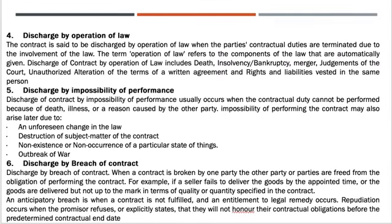Discharge by impossibility of performance: discharge of contract by impossibility of performance usually occurs when the contractual duty cannot be performed because of death, illness, or a reason caused by the other party. Impossibility of performing the contract may also arise due to an unforeseen change in the law, destruction of the subject matter of the contract, non-existence or non-occurrence of a particular state of a thing, or outbreak of war.